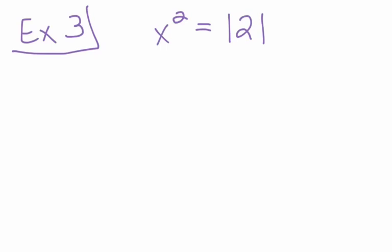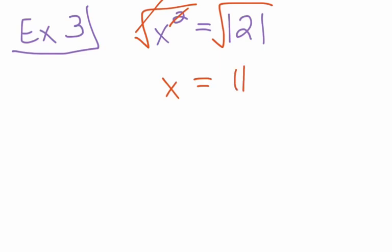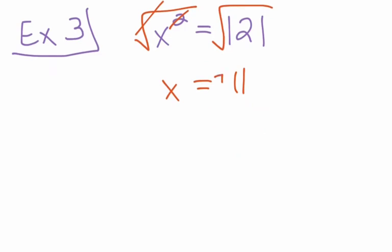Here's one for you to work on your own. Go ahead and pause the video and work through this: x squared equals 121. Once you're done, come back and I'll go through the work. We're going to square root both sides — that causes the square root and the second power to cancel, giving us x equals the square root of 121. A number multiplied by itself to equal 121 is 11, and we need to remember it can be positive or negative. So our answer is x equals plus or minus 11.